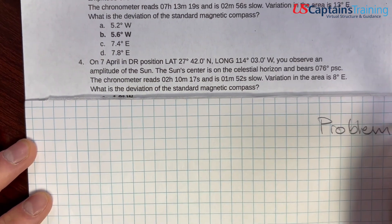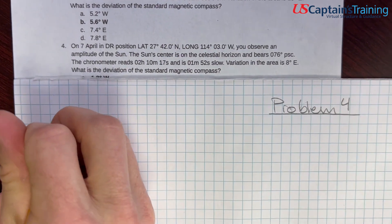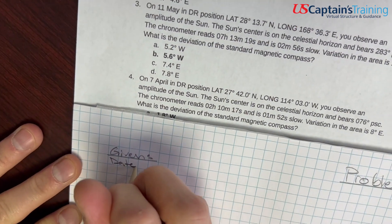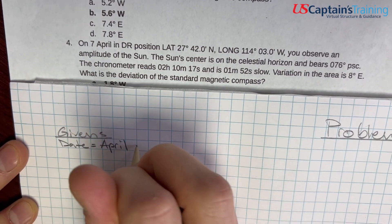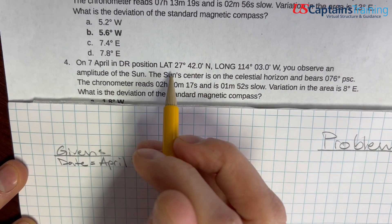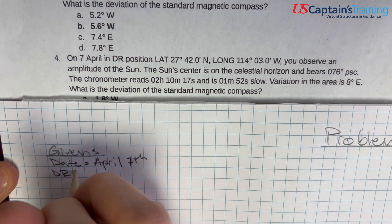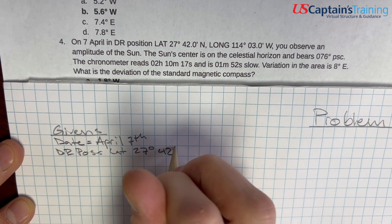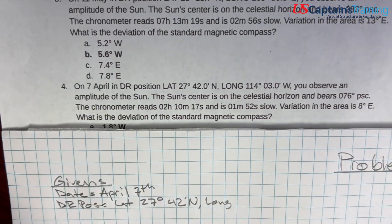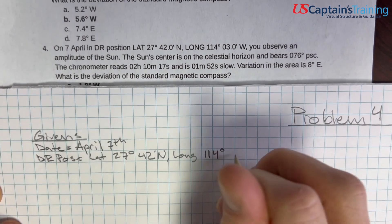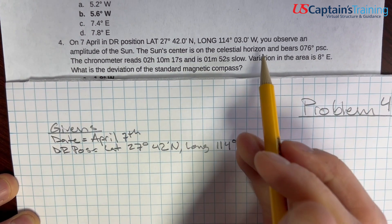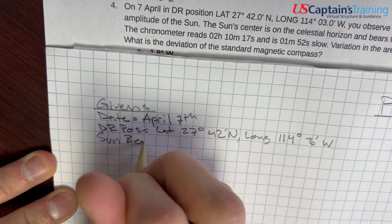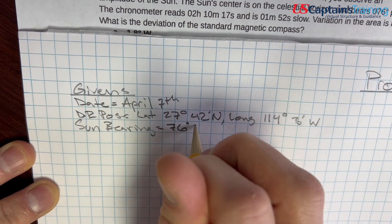Compass Deviation by Amplitude of the Sun, practice problem four. So here we're on problem four. Let's record all the givens in the problem. The date is April 7th. The DR position is latitude 27 degrees 42 minutes north, longitude 114 degrees 3 minutes west. And you observe the amplitude of the sun. The sun's center is on the celestial horizon and bears 76 degrees PSC.